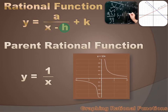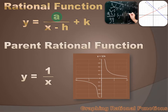You'll also notice that in the parent rational function, there's no h value. But if there were, that would impact how the equation graphed. There's also no k value, and that would impact how the equation graphed too. And the a value is one, but if a were something other than one, the function would graph differently from the parent rational function.